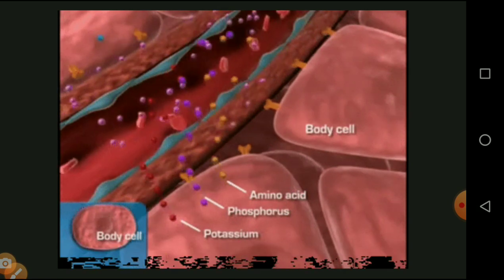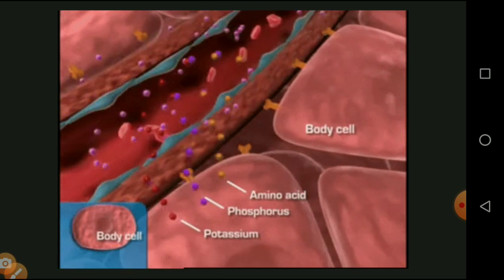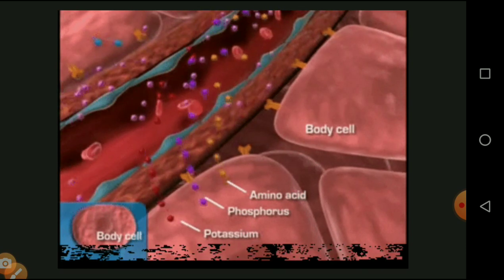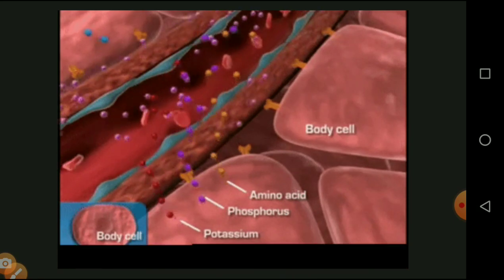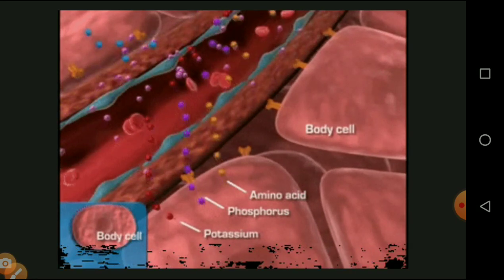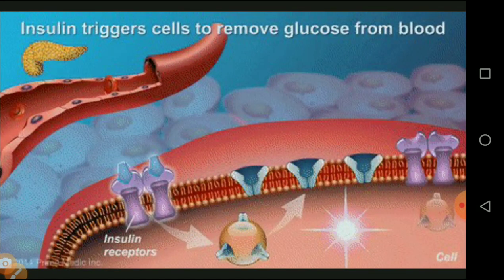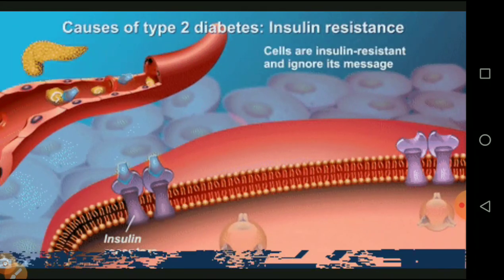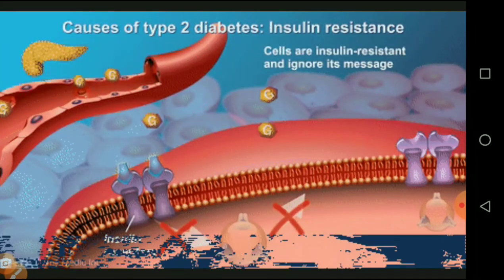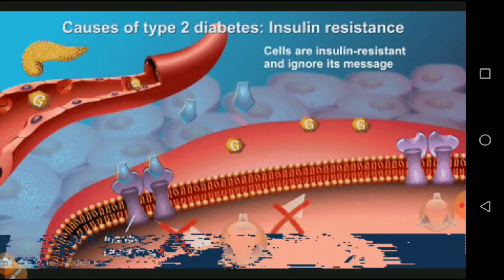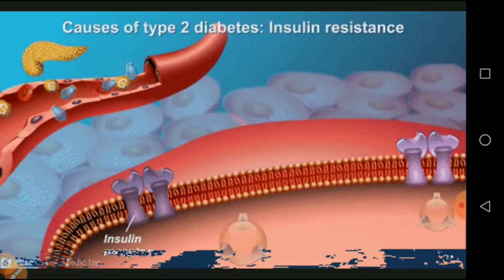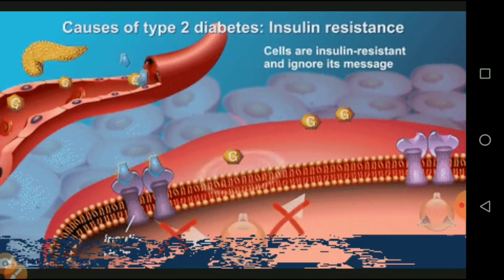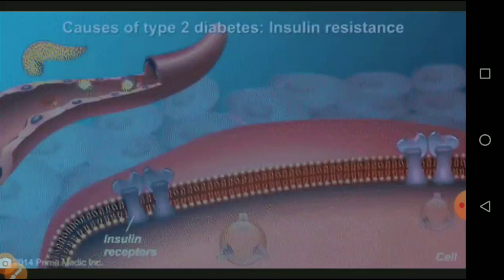Glucagon stores excess amounts of glucose in the form of glycogen in the liver. Insulin triggers cells to remove glucose from the blood. In Type 2 diabetes, our body is secreting insulin but it is not accepted by the body or is not in a sufficient amount, causing problems associated with this type of diabetes.